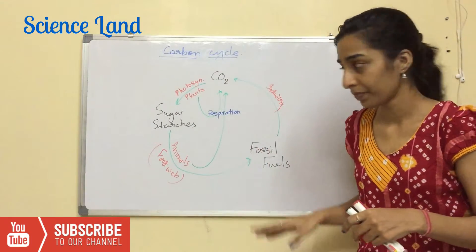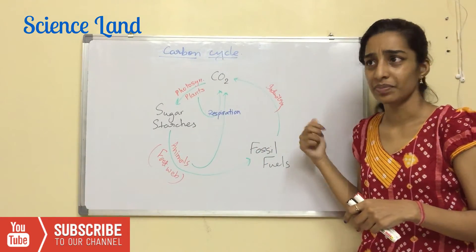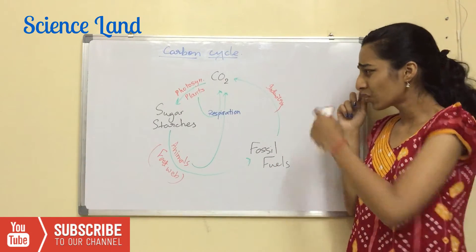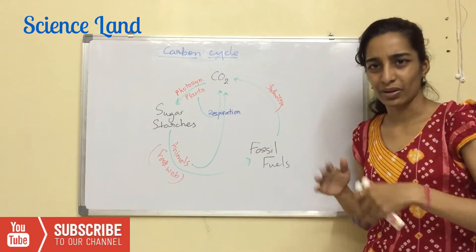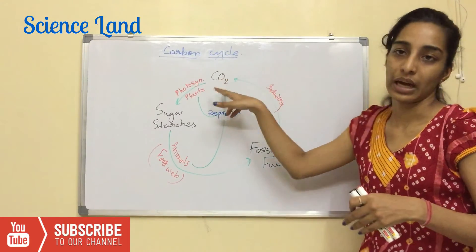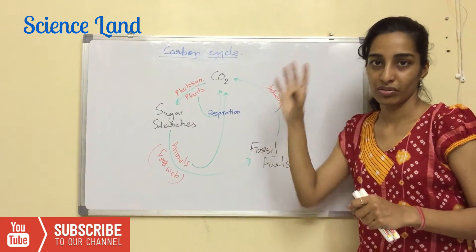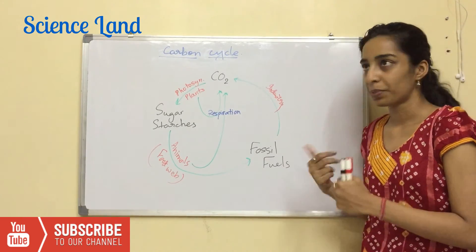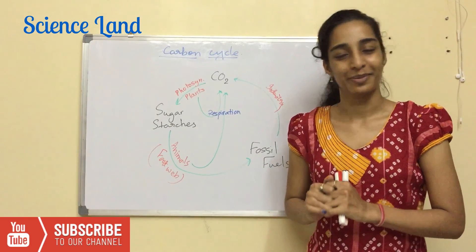After fossil fuel formation, two further options exist: industry — humans mine and burn the fossil fuels, releasing CO2 into the air — or weathering, where soil erosion and rainwater carry carbon into the ocean, and then carbon dioxide is released into the air. That is the carbon cycle. I hope you liked the video — do subscribe. Thank you for watching!